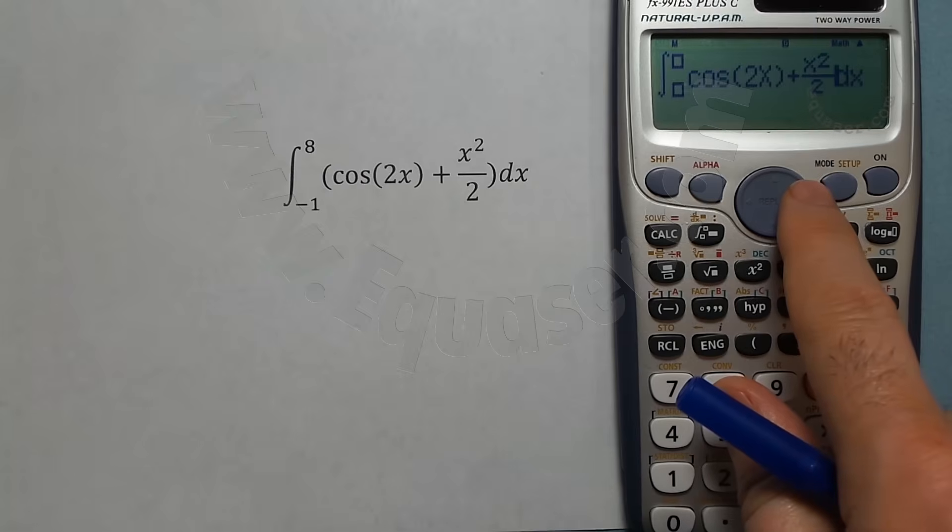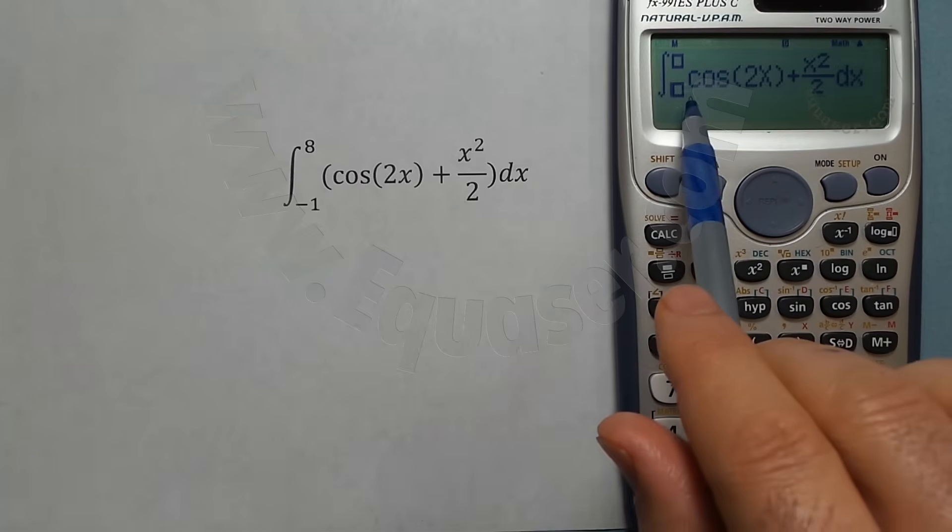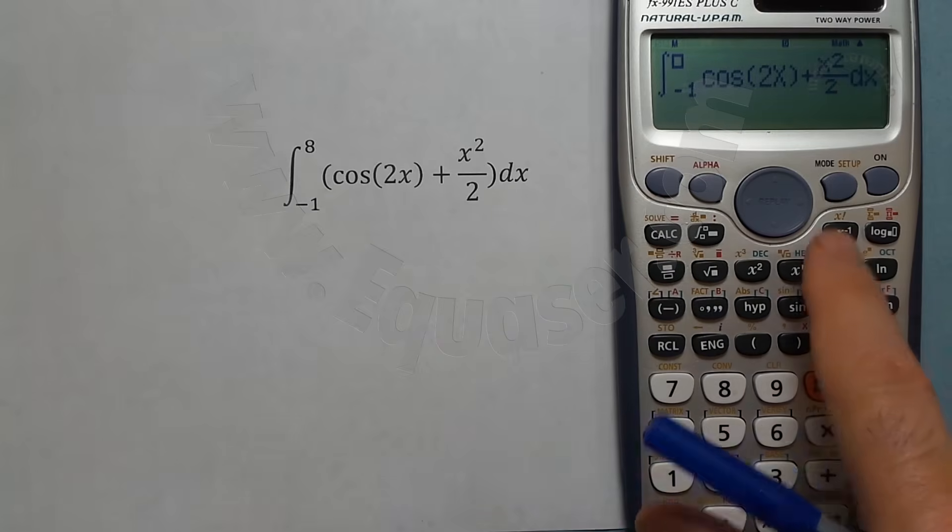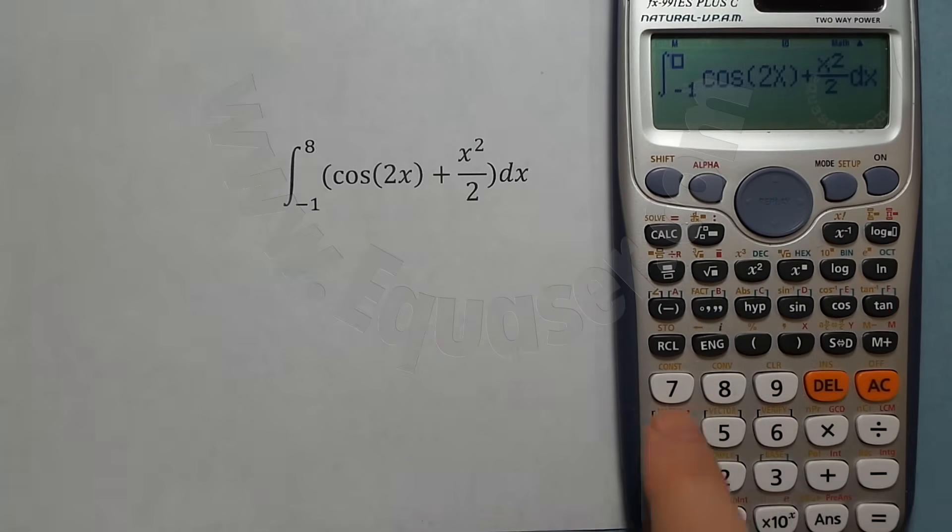So now lower bound, minus one, and then go to the right again. Upper bound is eight, and then equal sign. Blank screen, wait for it to be evaluated. So 94.39.